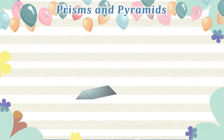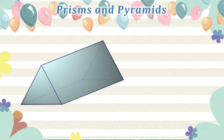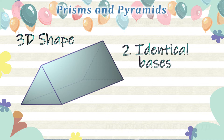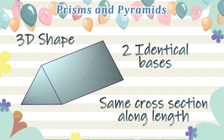What is a prism? A prism is a three-dimensional shape having two identical ends and having the same cross-section along its length.